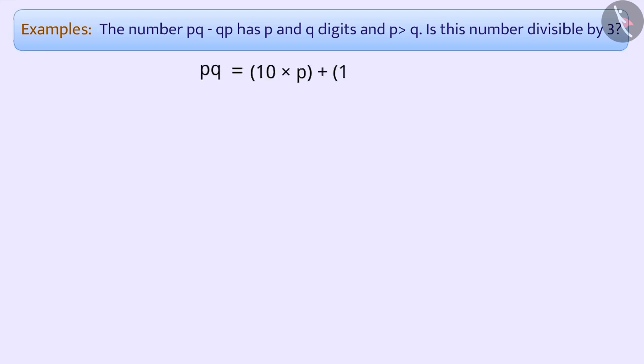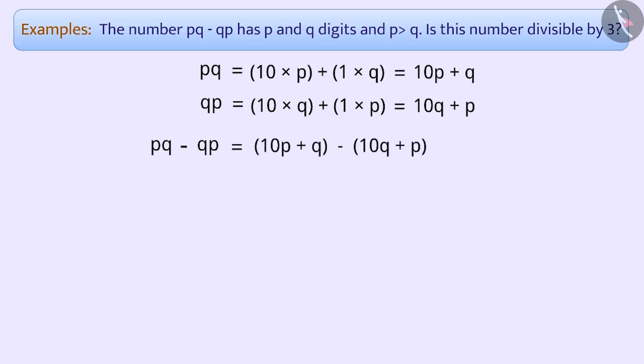We can write pq as 10×p + 1×q, that is 10p + q. Similarly, qp can be written as 10×q + 1×p, that is 10q + p. In this way, we can write pq - qp is equal to 10p + q - 10q + p.